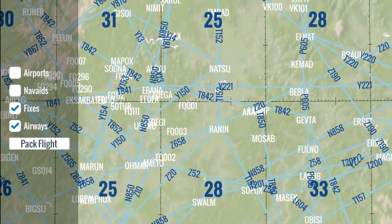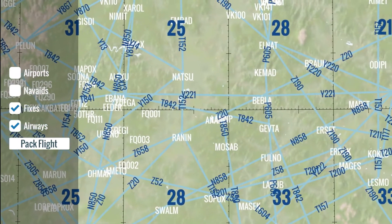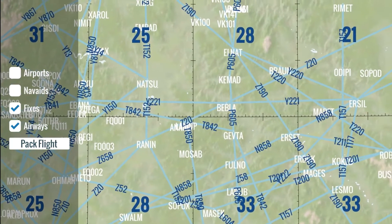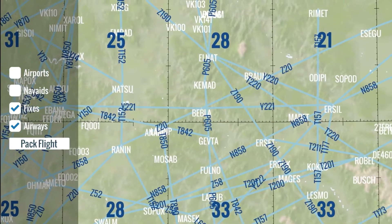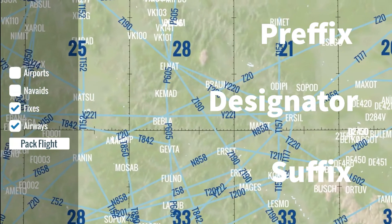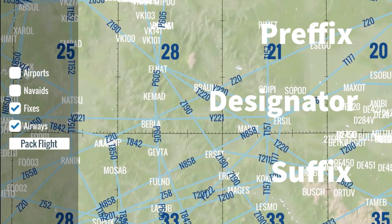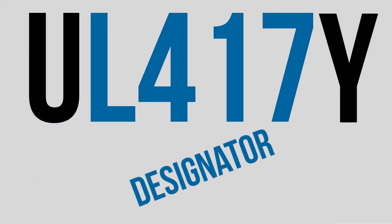And that is more or less where their names come to play. Those names are actually divided into three parts: the prefix, the designator, and the suffix. For example, in airway United Lima 417 Yankee, United is the prefix, Lima 417 is the designator, and Yankee is the suffix.